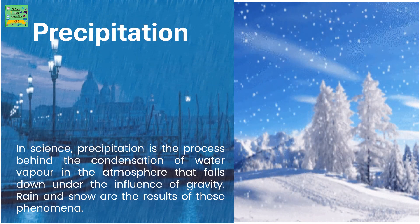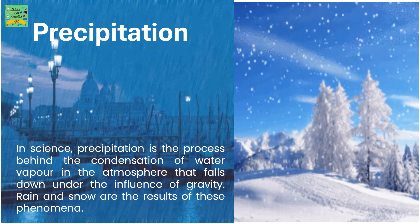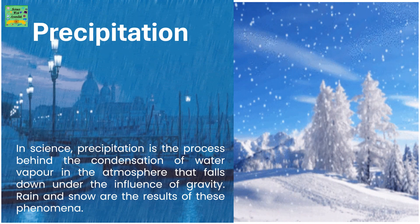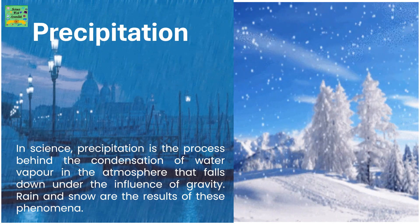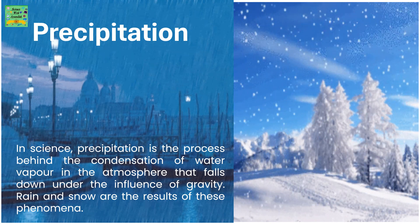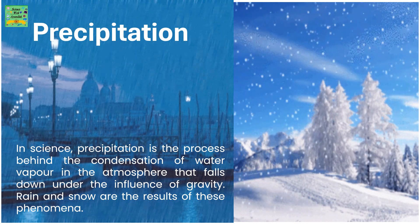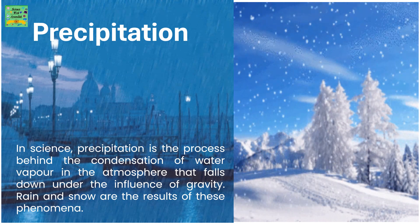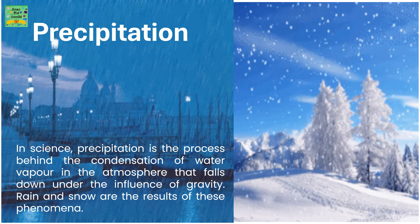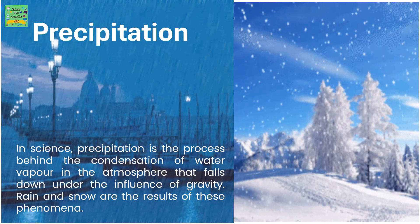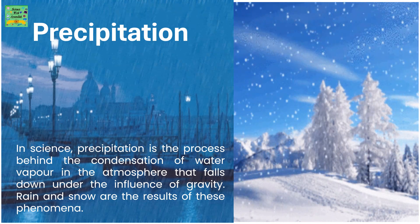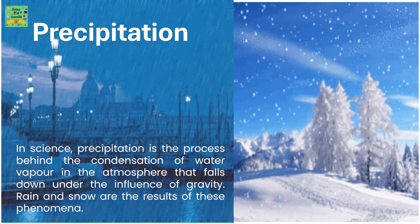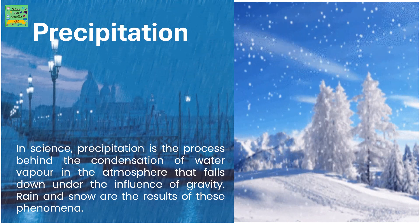Precipitation is water released from clouds in the form of rain, freezing rain, sleet, snow, or hail. Precipitation is the main way atmospheric water returns to the surface of the earth. Most of the precipitation falls as rain. In science, precipitation is the process behind the condensation of water vapor in the atmosphere that falls down under the influence of gravity. Rain and snow are the results of these phenomena.